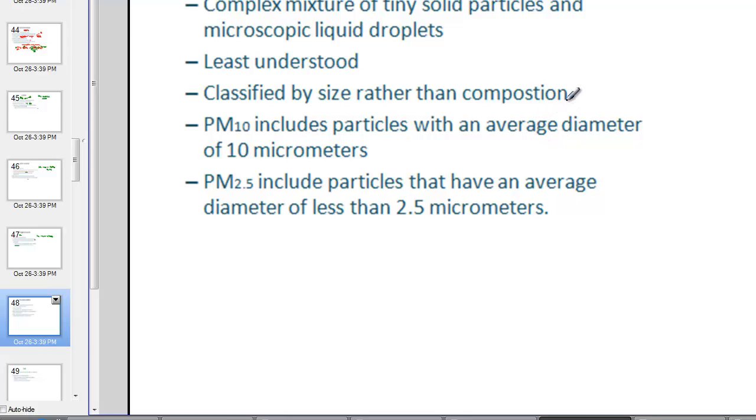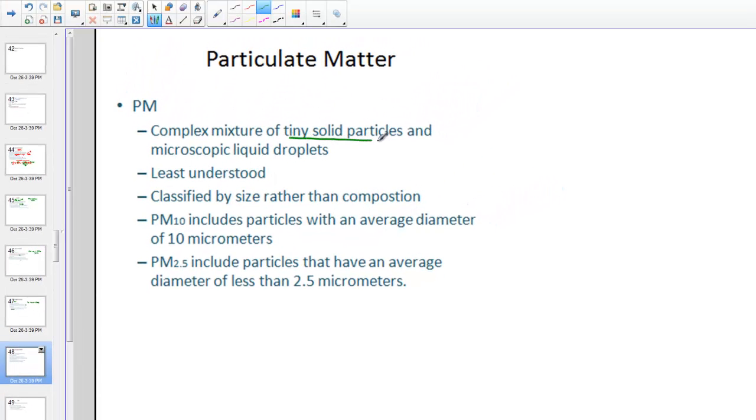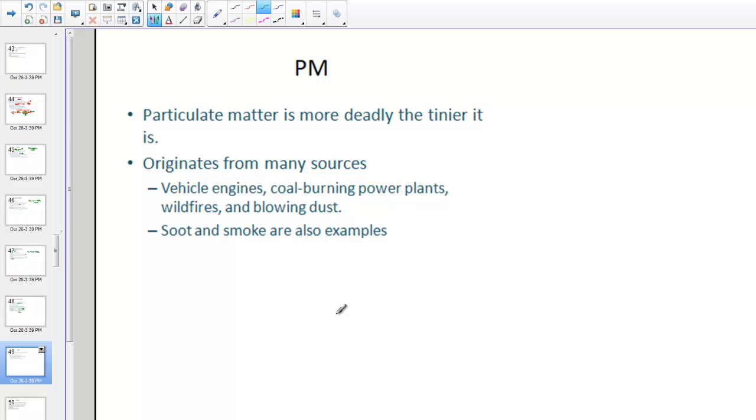What we refer to as particulate matter is actually a really complex mixture of very tiny, solid particles that are microscopic droplets. So they're suspended in the air. They're probably least understood of all of the pollutants in the air. But they're classified by size rather than composition. So particulate matter with a subscript of 10 is anything that averages about 10 micrometers. Remember, a micro is 10 to the negative 6th meters. Pretty small. And PM 2.5, or a little bit larger, some 2.5 micrometers. And so depending upon the size, you can see that the damage they have, the capability of doing, the smaller that particulate matter, the easier it gets lodged in our lungs and starts to wreak havoc in our lung tissue. So particulate matter is more deadlier the tinier it becomes.